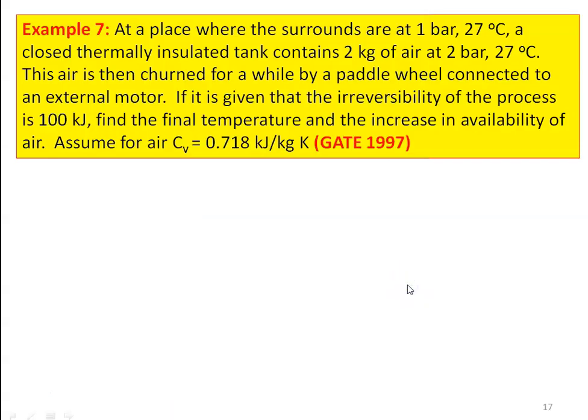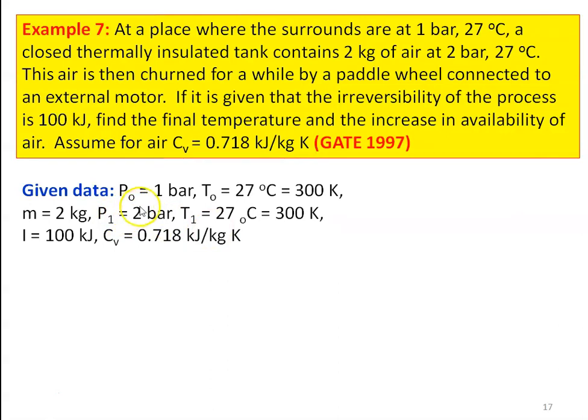Example number 7 from the GATE question paper 1997: at surroundings of 1 bar and 27°C, a closed thermally insulated tank contains 2 kg of air at 2 bar, 27°C. Air is churned by a paddle wheel connected to an external motor. Given irreversibility of the process is 100 kJ, find the final temperature and increase in availability. Cv = 0.718 kJ/kg·K.